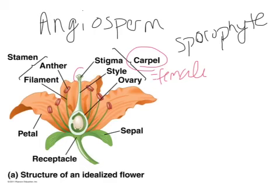The stigma is the sticky part on the end where pollen can attach, and the style is where the sperm will travel down on the way to the ovary where the egg is. The stamen, which is the male portion, contains the anther — which actually produces the pollen — and the filament's job is to hold the anther up high enough so that birds and insects can come into contact with the pollen.